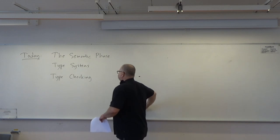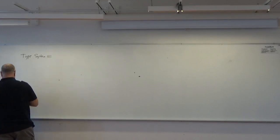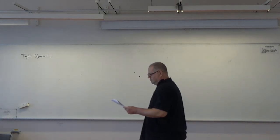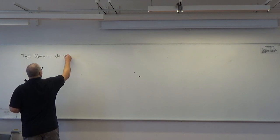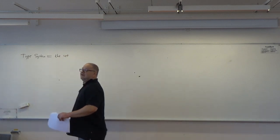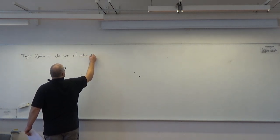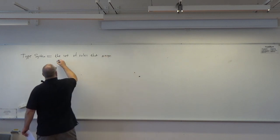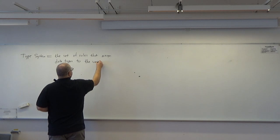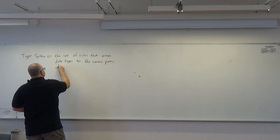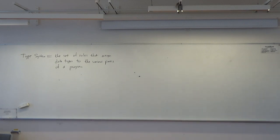So, what is a type system? It's the set of data types that the programming language supports, plus the set of rules that assign data types to the various parts of a program. Each language has its own type system.